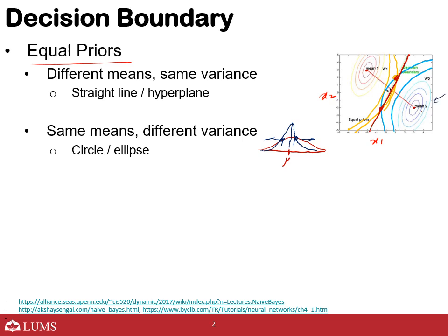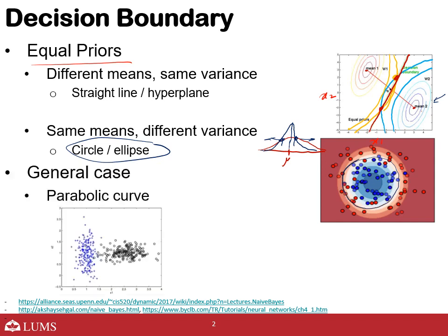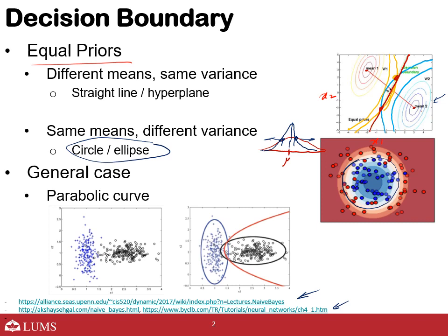Since the variance is different along different features, the contours become ellipses, and so the decision boundary also becomes circular or elliptical. In the general case for naive Bayes, the decision boundaries are parabolic curves. Here you are looking at two classes — black dots and blue plus forms. When you fit the Gaussians, the contours intersect and you get a parabolic decision boundary.